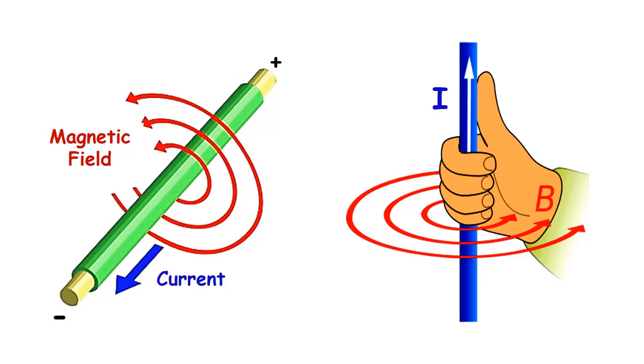If the current flowing through the conductor is DC, the magnetic field is constant, and if the flowing current is AC, the direction of the magnetic field constantly changes.